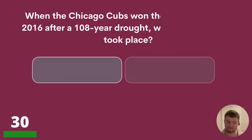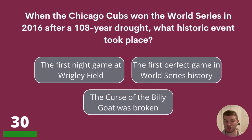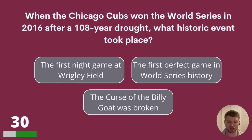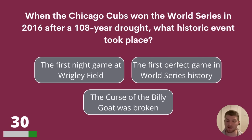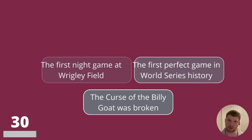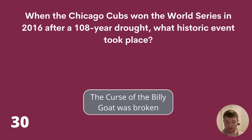Question 30. When the Chicago Cubs won the World Series in 2016 after a 108-year drought, what historic event took place? The first night game at Wrigley Field, the first perfect game in World Series history, or the Curse of the Billy Goat was broken? The Curse of the Billy Goat was broken is the answer.